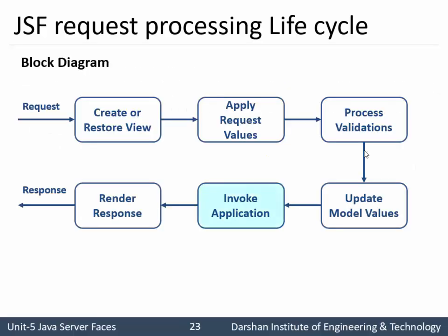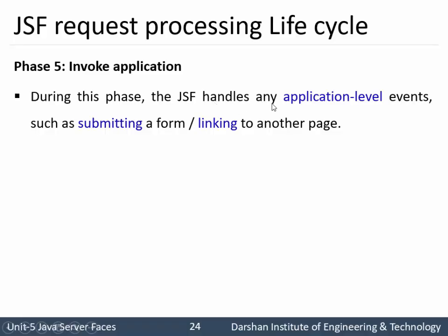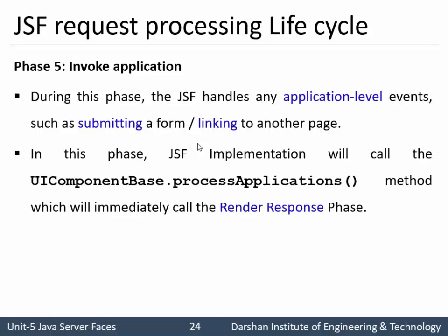Phase 5 is Invoke Application. During this phase, JSF handles any application-level events such as submitting a form or navigating from the current page to the next page. The JSF implementation calls a method named processApplication, which immediately calls Render Response. This phase is used to link to any other page or handle any application-level event.